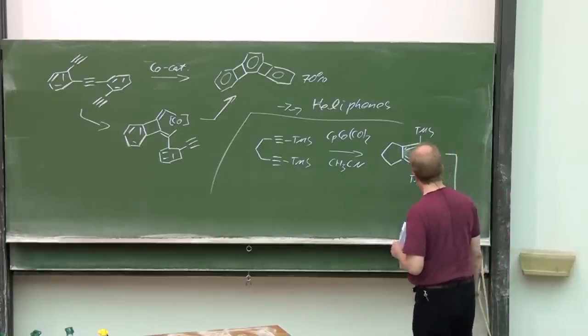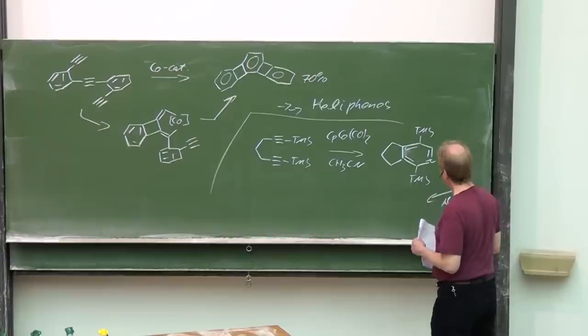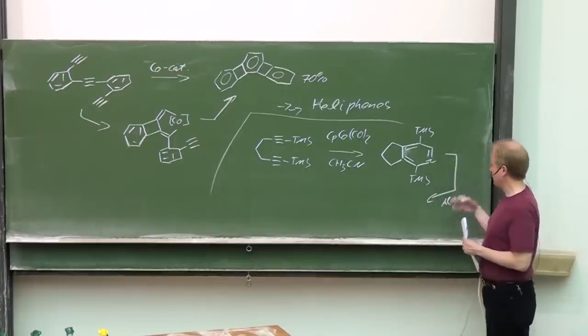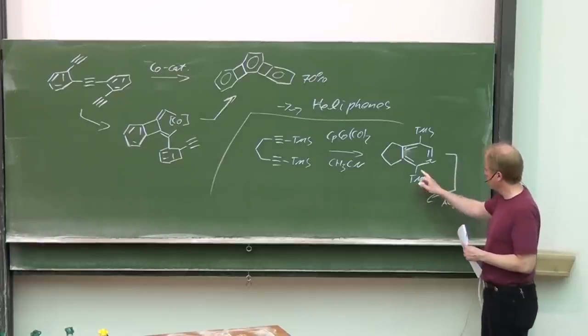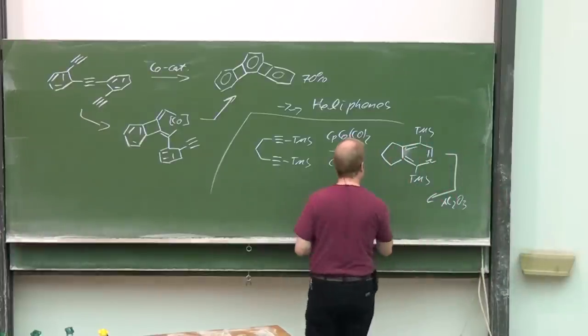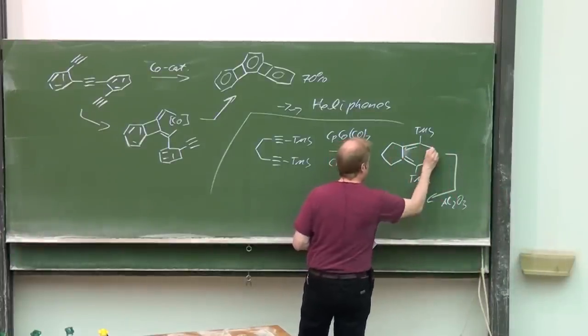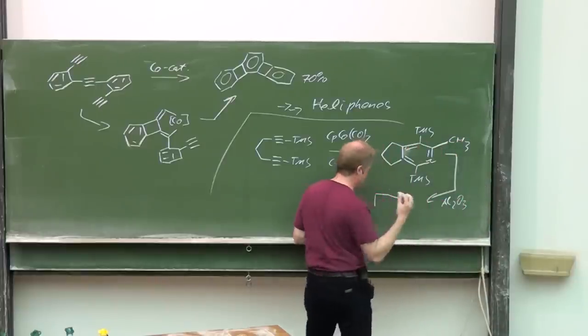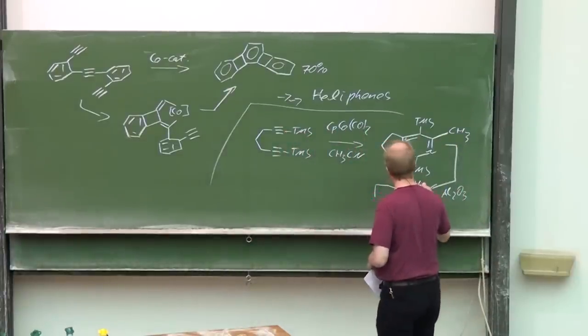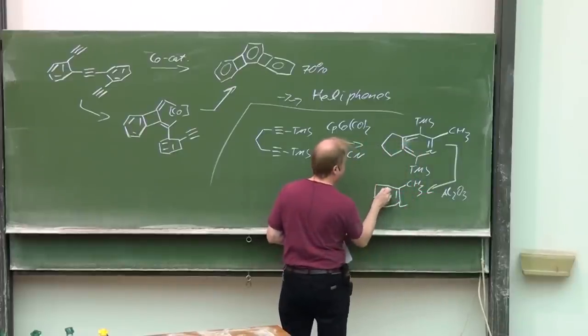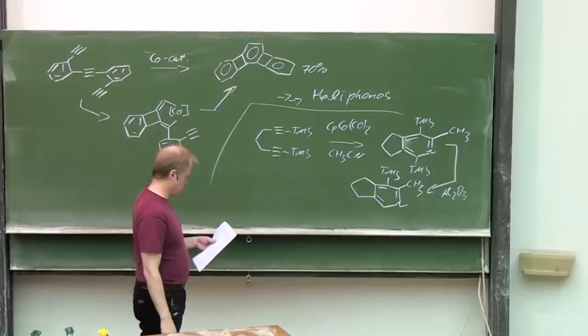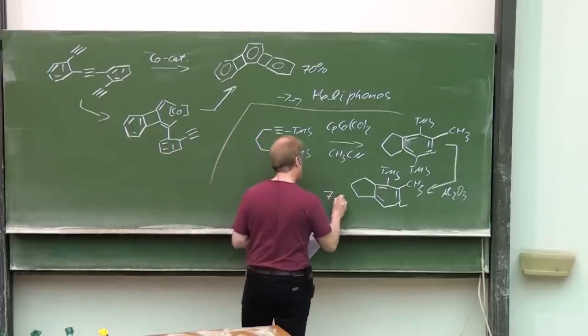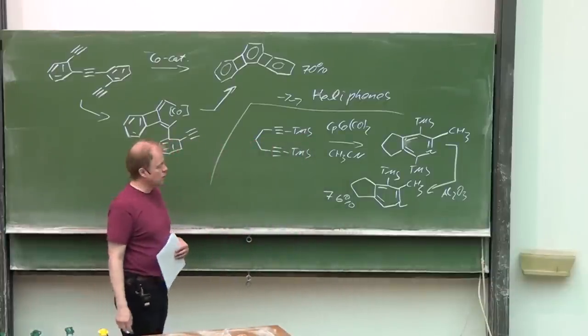Just with aluminum oxide, as it turned out, filtrating over neutral aluminum oxide is already sufficient for a proto-desilylation of this sensitive TMS group. Sorry, the methyl group here was missing. You noticed that already. This was the product which was obtained with 76% overall yield.